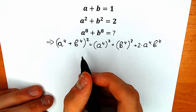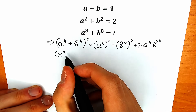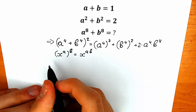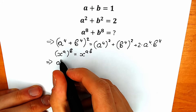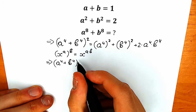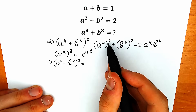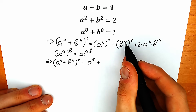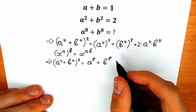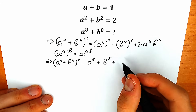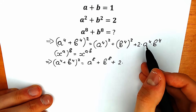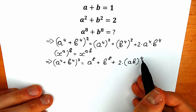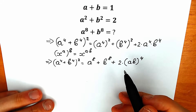Let's look closely. We need a key property: when we have x to the power a raised to the power b, we multiply the exponents to get x to the power a times b. Applying this, a to the fourth plus b to the fourth, all squared, equals a to the power 8 plus b to the power 8, plus 2 times (ab) to the fourth. We can group that last term inside parentheses — it's absolutely the same thing.